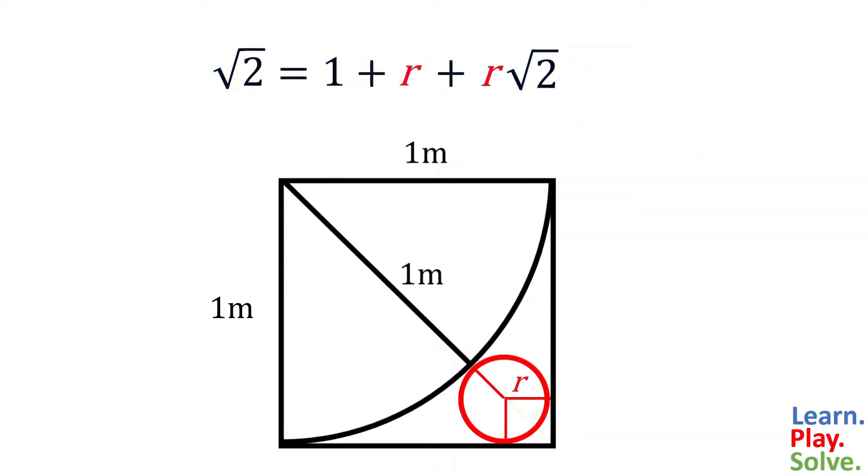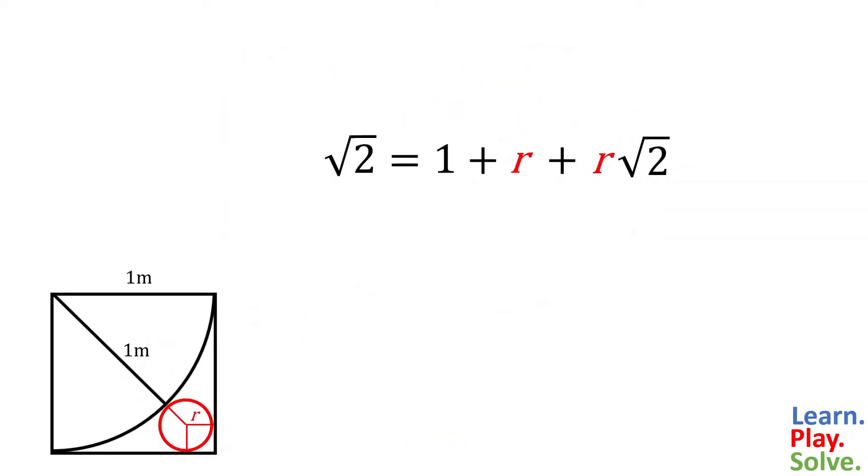That gives us an equation with one variable. If we solve for r, then we know the radius of the small circle. First, we can subtract 1 from both sides, then factor out the r from both terms on the right.